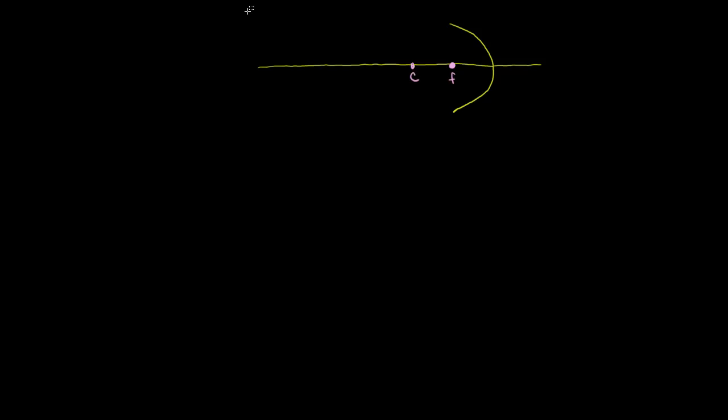So that's a parabolic mirror. I've drawn its principal axis right over here. Let me draw the focal point too — this is the focus right over here. And this is the center of curvature; it's twice the distance from this point as the focus. So that is the center of curvature right over there. Let me copy and paste this so we can reuse it later in the video and I don't have to keep drawing it.